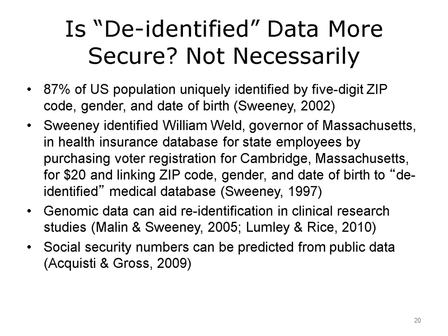In the case of William Weld, Sweeney was able to access a health insurance database for state employees — and Governor Weld was obviously a state employee. She also was able to purchase the voter registration list for the city of Cambridge, Massachusetts, where the governor lived. She then combined these two databases, linking the zip code, gender, and date of birth, and was able to identify the governor. Just as genomic data may make individuals identifiable, some recent research has also shown how Social Security numbers of individuals can be predicted from public data.